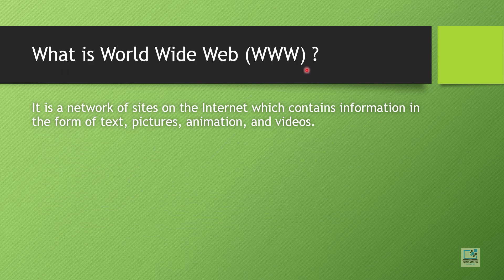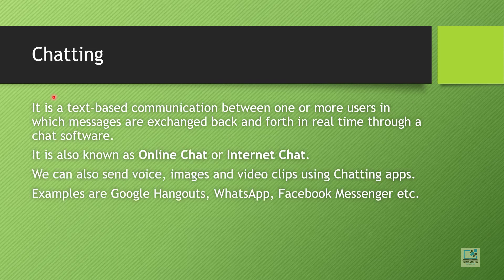Next is the World Wide Web. You must have seen 'www' whenever you write any web address — whether it is www.google.com or www.amazon.in. But what exactly is www? Basically it is a network of sites on the internet which contain information in the form of text, pictures, animation, and videos. It is essentially a collection of all websites, which is why every website address starts with www.